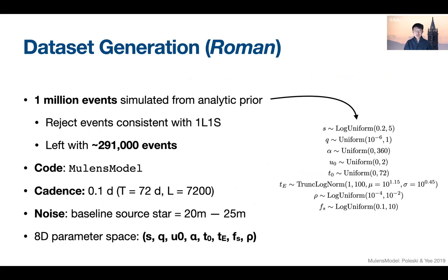Briefly, I'll mention that for the training set generation, we first simulated 1 million magnification curves under Roman's noise and cadence properties. We then fitted each one of them with a single-lens model and used the 30% which are inconsistent with a single-lens fitting as the training set. We infer on 8 standard binary lensing parameters, which does not include higher order effects such as parallax.